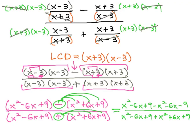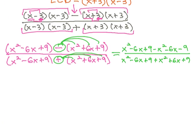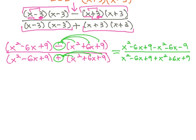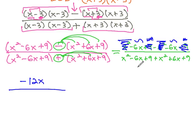And I'm running out of space, so I'm going to scroll down. Combining like terms: x² minus x² is 0, -6x and -6x is -12x, and 9 and -9 is 0. So we just have -12x over 2x² (since -6x plus 6x is 0) plus 18.